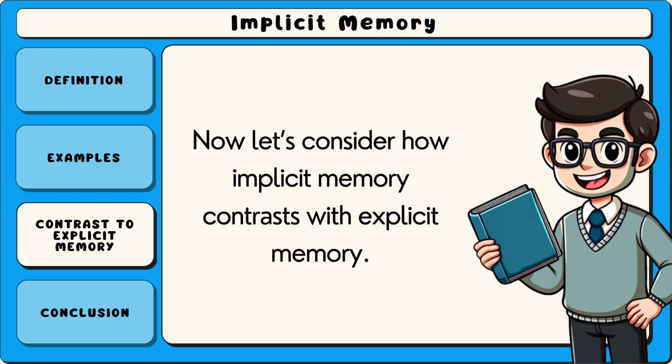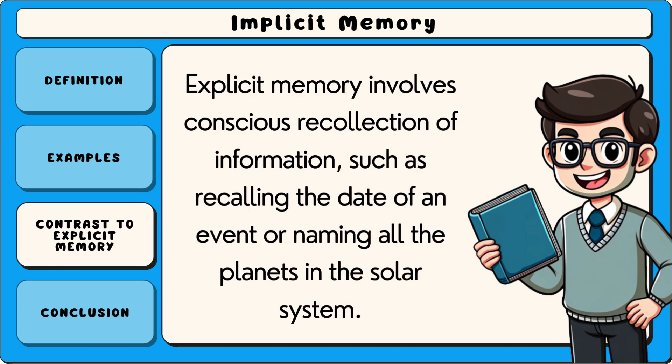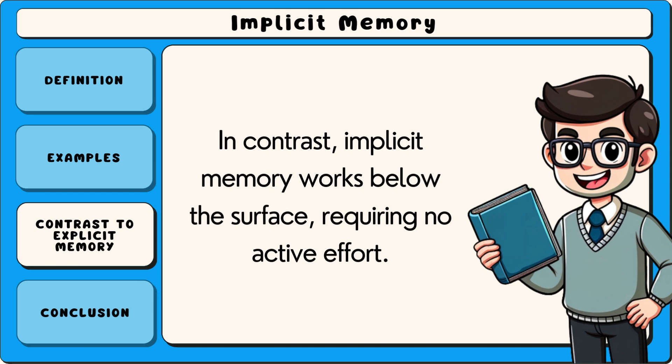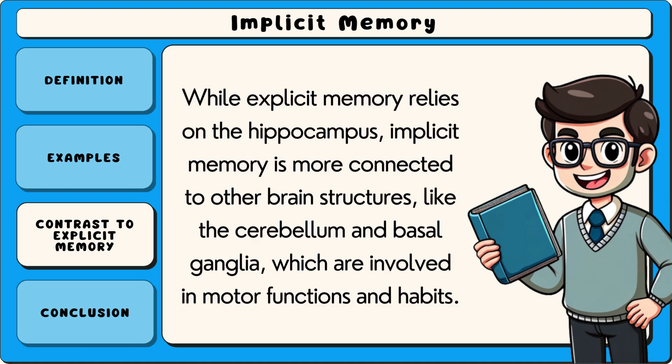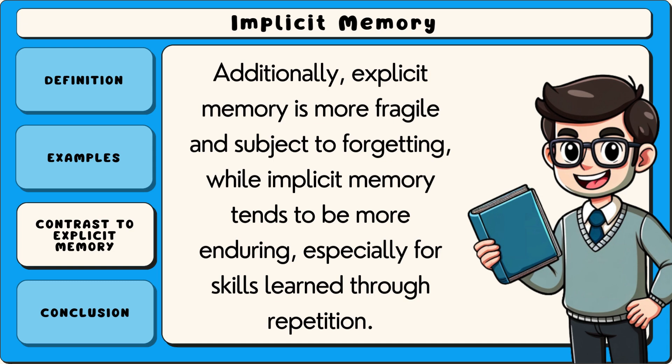Now let's consider how implicit memory contrasts with explicit memory. Explicit memory involves conscious recollection of information, such as recalling the date of an event or naming all the planets in the solar system. In contrast, implicit memory works below the surface, requiring no active effort. While explicit memory relies on the hippocampus, implicit memory is more connected to other brain structures like the cerebellum and basal ganglia, which are involved in motor functions and habits. Additionally, explicit memory is more fragile and subject to forgetting, while implicit memory tends to be more enduring, especially for skills learned through repetition.